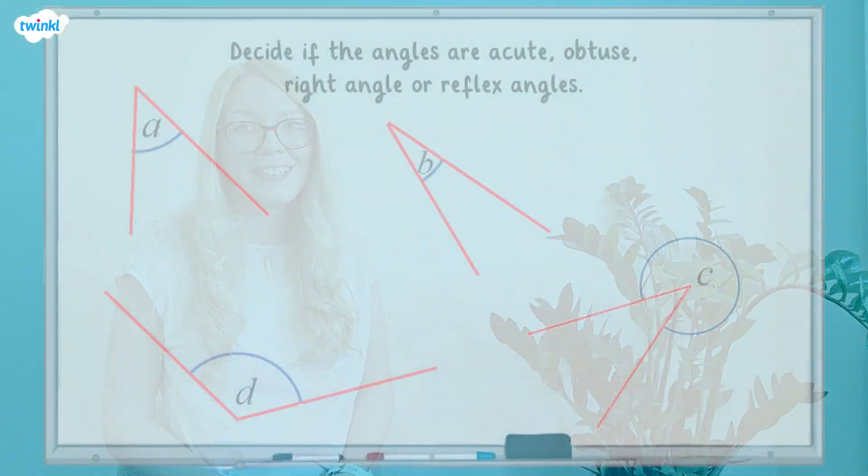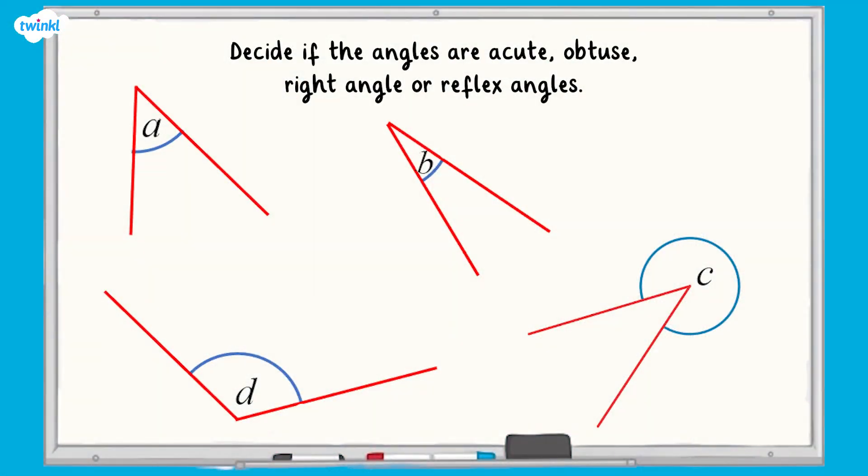Now it's your turn. Decide whether these angles are acute, obtuse, right angle or reflex angles. Pause the video here to make your estimates.